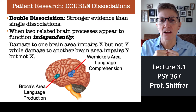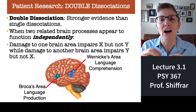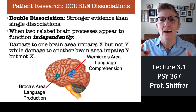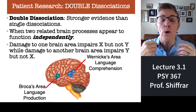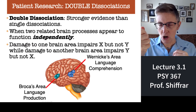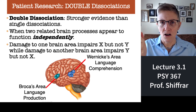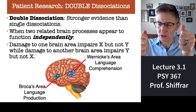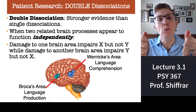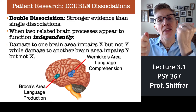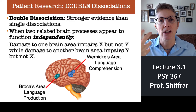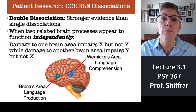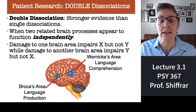A double dissociation is said to occur when a researcher can find at least two patients that have opposite abilities. We know KC hung on to his knowledge — his memory of facts — but lost his memory for individual life events. Imagine finding someone who had the opposite: they could remember events from their lives but not general facts. If you could find both people, sort of the mirror reverse of one another, that would be called a double dissociation.